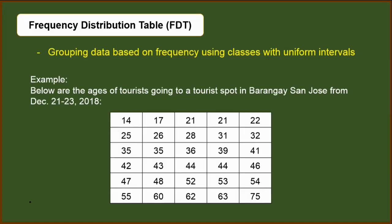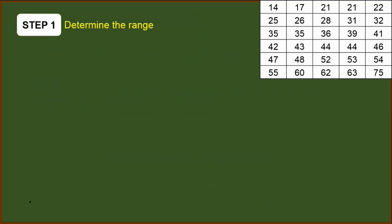First thing that we have to do is to determine the range. Range is defined by the difference between the highest and the lowest value in the data set. In this case, the highest value is 75, the lowest is 14, so our range is 61.